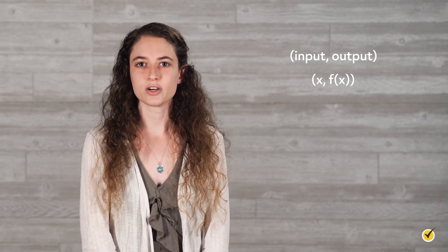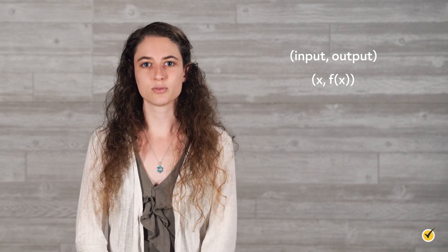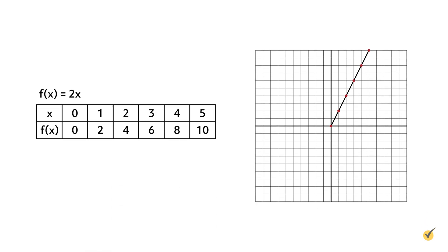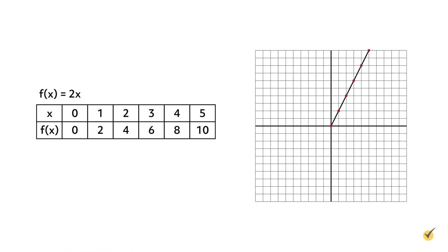Let's take a look at the graph for the function f equals 2x. As you can see, this is a linear function because the graph forms a straight line. The x-axis represents the input, x, and the y-axis represents the output, 2x.